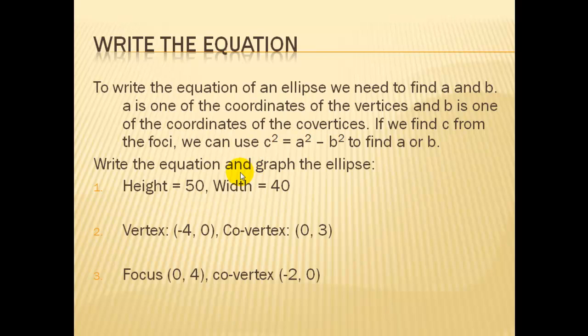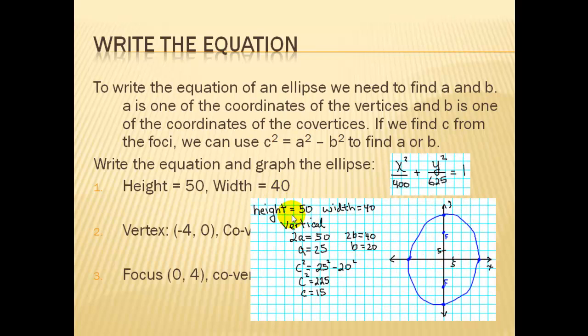Now we need to decide, is it vertical or horizontal? Since the height, which is up and down, is longer than the width, that means this is a vertical one. And if you remember from the information, 2 times a is our height. So our a is going to be 25. And our b is half of this, which is 20. So let's look at that problem. So here, we've talked about this already. We can use our formula to calculate c, so that we can find where our foci would be.